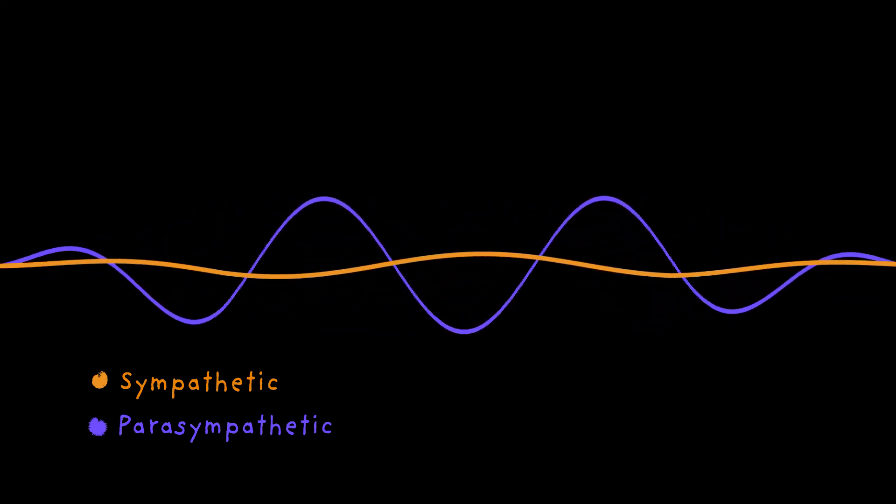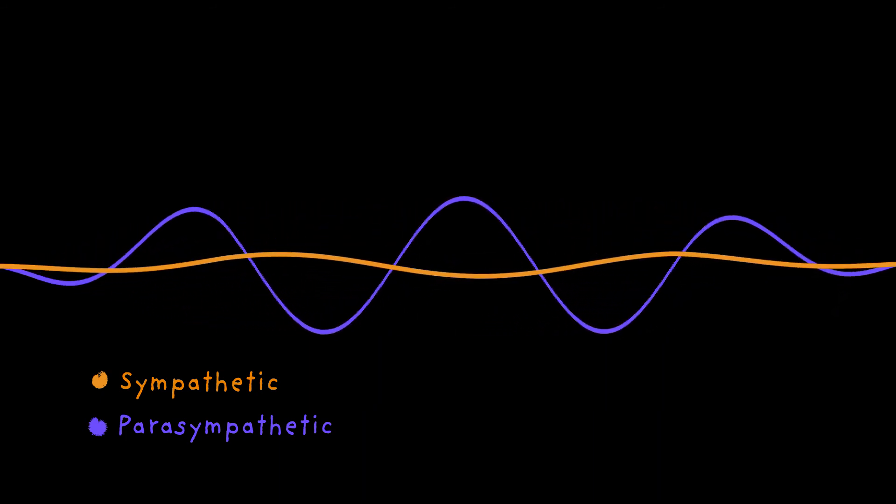This increased tone not only lowers your heart rate but feeds back into the cognitive and emotional regulatory systems in your brain. Higher resting parasympathetic tone has been linked to positive traits including greater resilience to stress and improved cognitive performance.